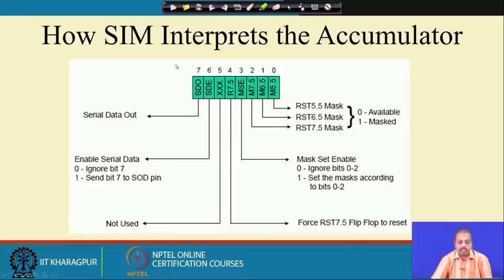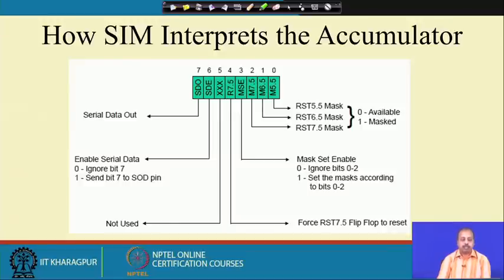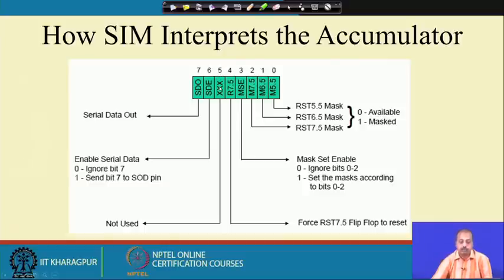The SIM instruction also helps with serial data transmission. The first two bits SDO and SDE are for serial data input/output. If the SDE bit is set to 0, it will ignore the SDO line. Bit number 5 is not used. The remaining 5 bits are used to control the mask flip-flops.